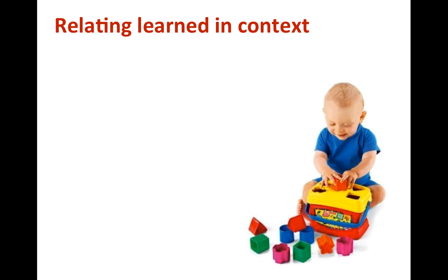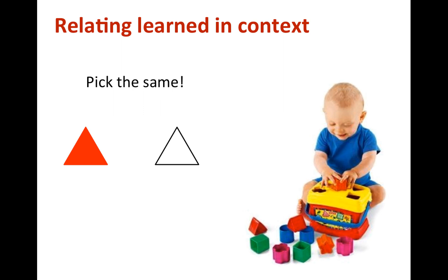RFT has produced a number of experiments to study the behavior of relating and how the context influences it. Instead of going through a whole experiment, I'm going to give you a natural example. You can see this typical educative toy for kids, where the goal is to put objects in holes according to their shapes. As the kid is playing, maybe there is a parent nearby who helps him and comments. For example, the parent may say 'pick the same' while showing the hole with a triangle shape, and if the kid picks a triangle, the parent says 'good job.'